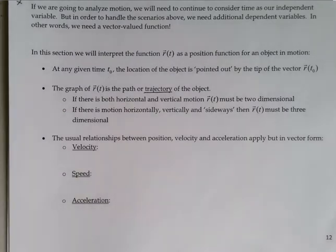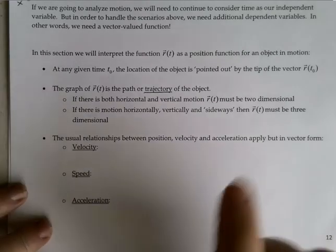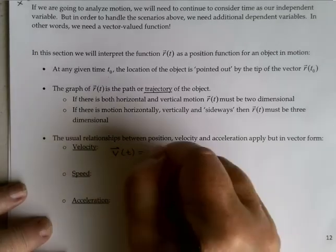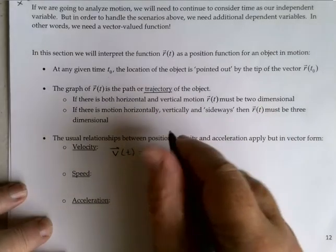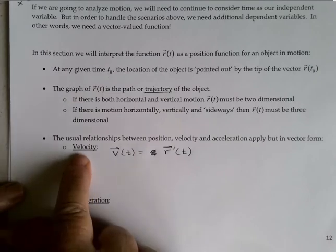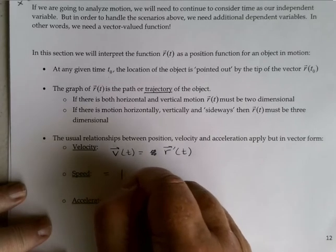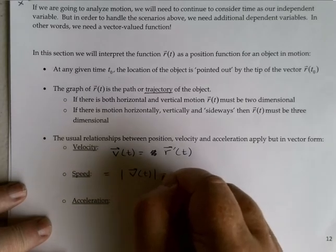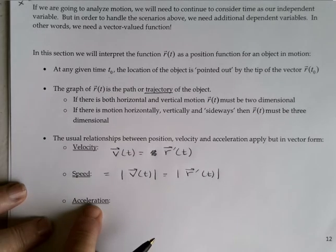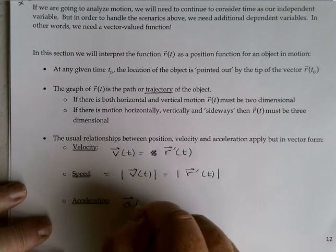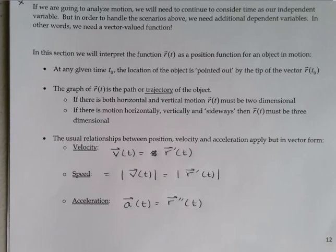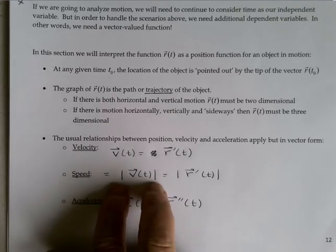These same relationships hold from the Calc 1 example. If r is my position, then the velocity is going to be the derivative of that — velocity will also be a vector and is the derivative of r. Speed is just the size or magnitude of velocity — the magnitude of r prime. And acceleration is the second derivative of the position, and it will also be a vector: r double prime. These should be pretty familiar relationships, other than interpreting this as a magnitude rather than an absolute value.